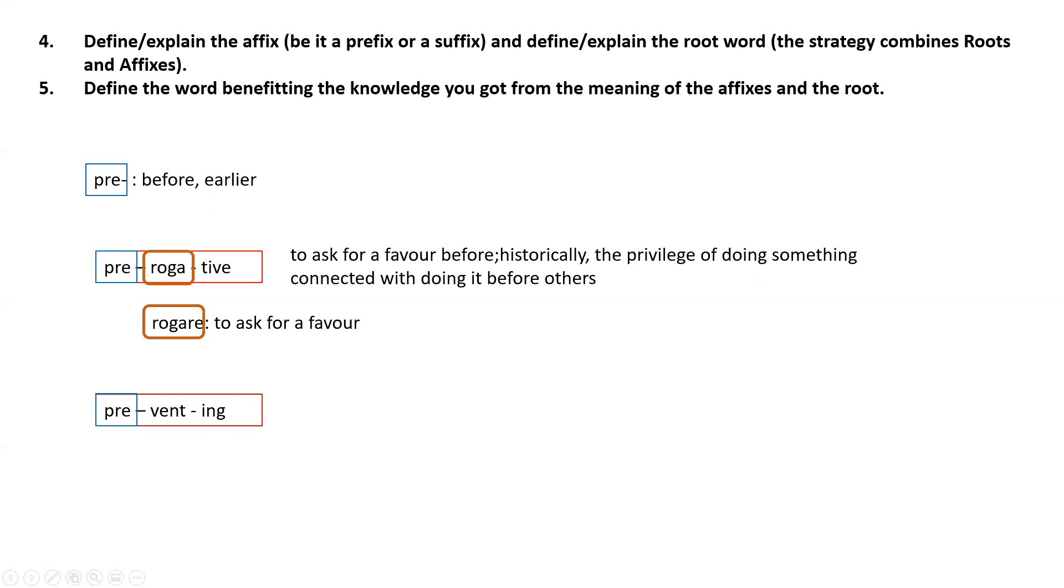And then preventing. Vent would be the root, and it derives from venire, which meant to come—and to come earlier, to do something before something else happens, to act sooner. And that's basically what preventing means.